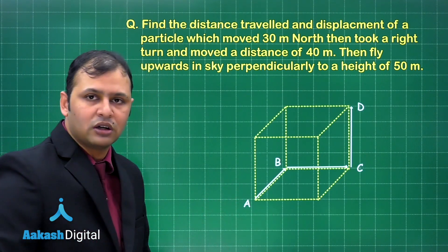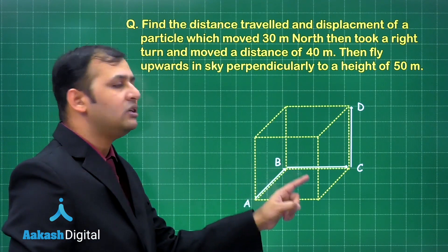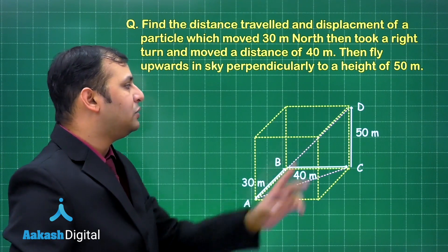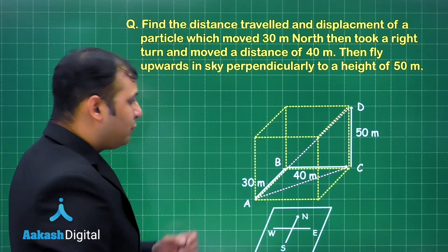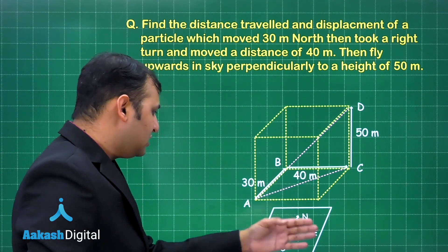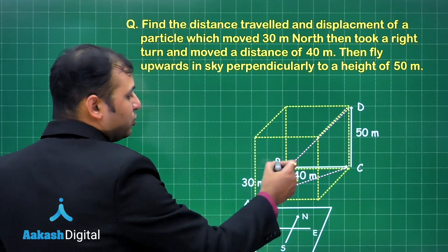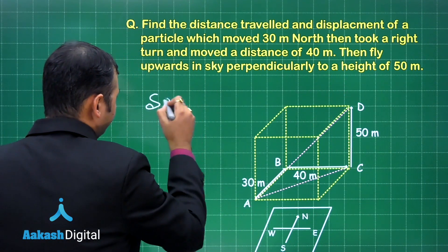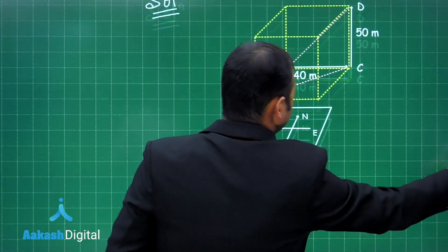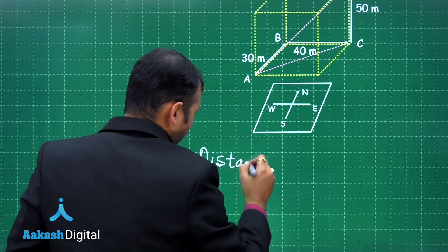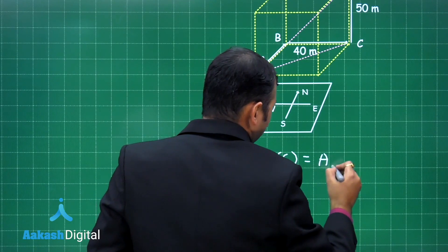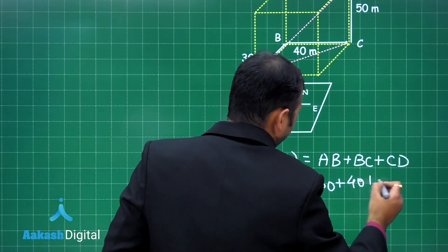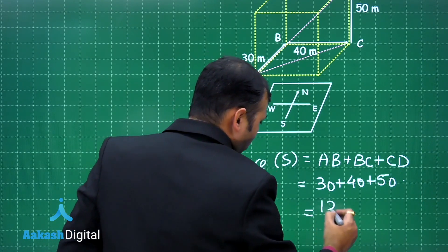In this cuboid structure, the object moves from A to B (30 meters, north), then B to C (40 meters, east), then C to D (50 meters, upward). The total distance is AB + BC + CD = 30 + 40 + 50 = 120 meters.